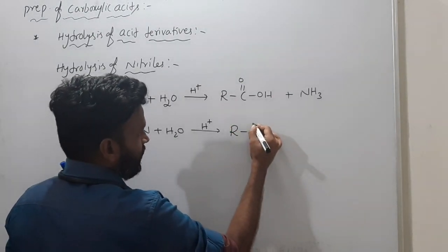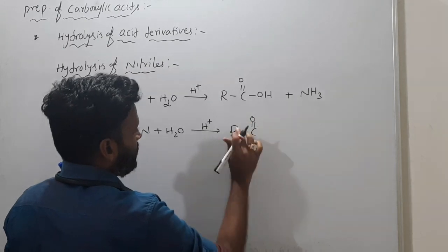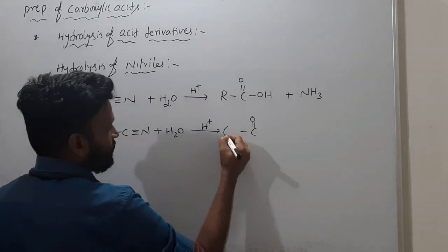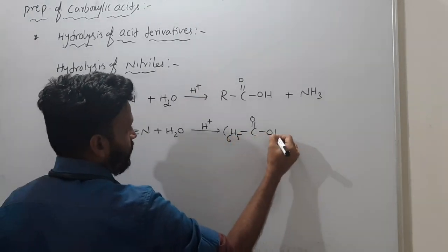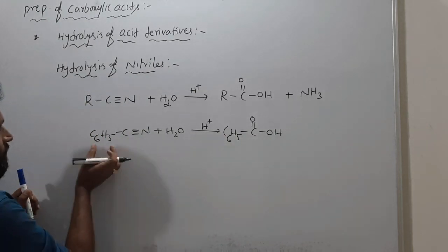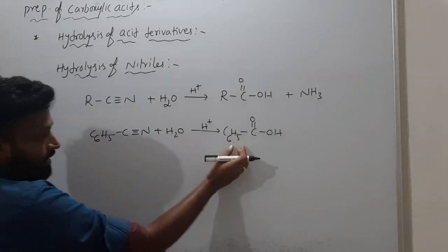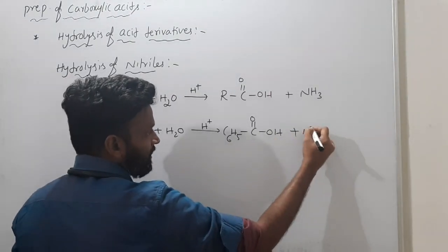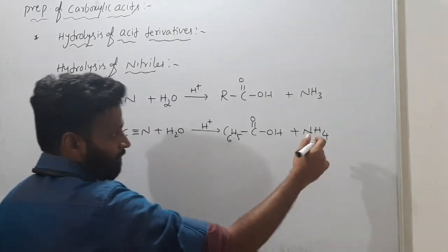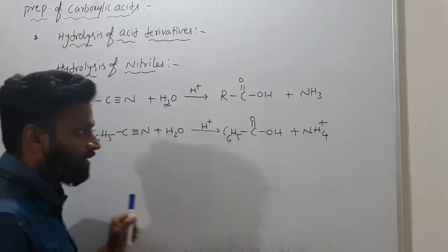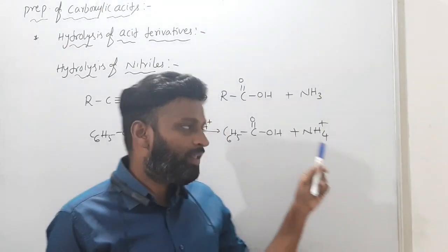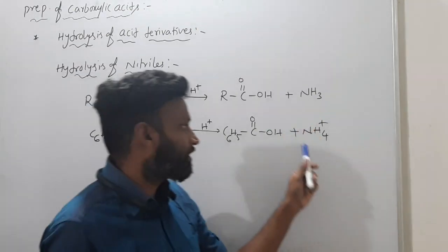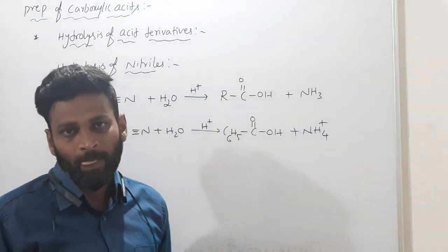For example, C6H5-C≡N with water and H+ gives C6H5-COOH, benzoic acid. If it is a methyl group, CH3-C≡N gives CH3COOH. Nitrogen comes out as NH4+, which is NH3 and H+ combined.